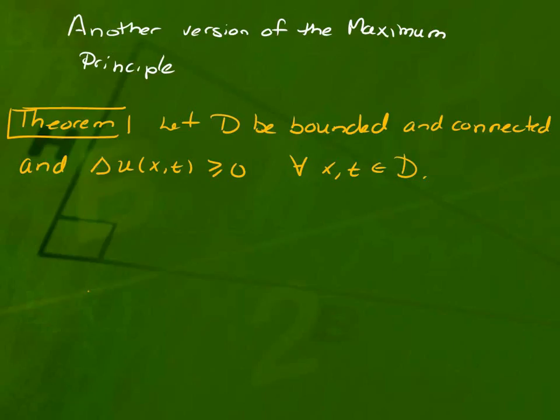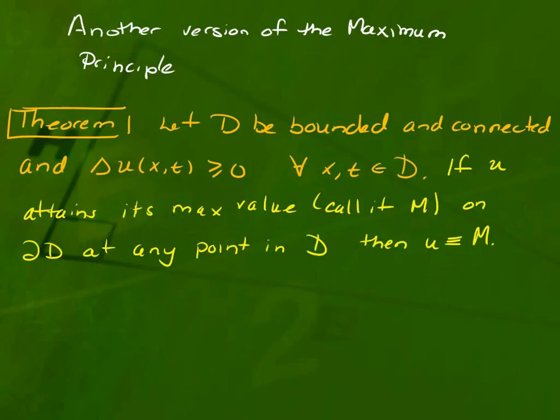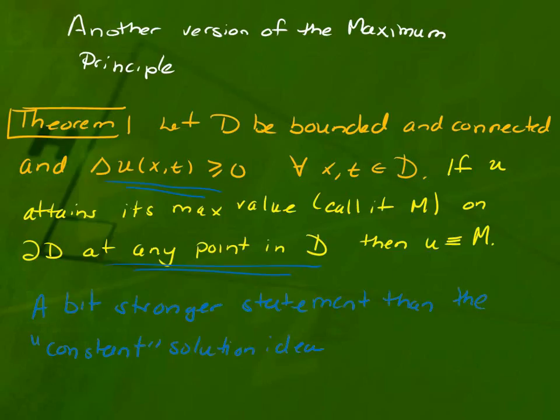There's another version of this maximum principle. I'm not using omega here, I want you to see the picture. Now I'm looking at just a one-dimensional space, and if I have not that the Laplace equation is satisfied, but Laplace u is greater or equal to zero, so not even equality. I'm working with the 1D Laplace so we can see the pictures. Then if u attains its maximum value, call it m, on any point on the boundary, then u is identically equal to m. So it's a different version of the maximum principle. That book I was telling you about called The Maximum Principle has tons of versions, and you can use them to prove all kinds of beautiful things. It's a bit stronger statement than the constant solution idea I told you about earlier.